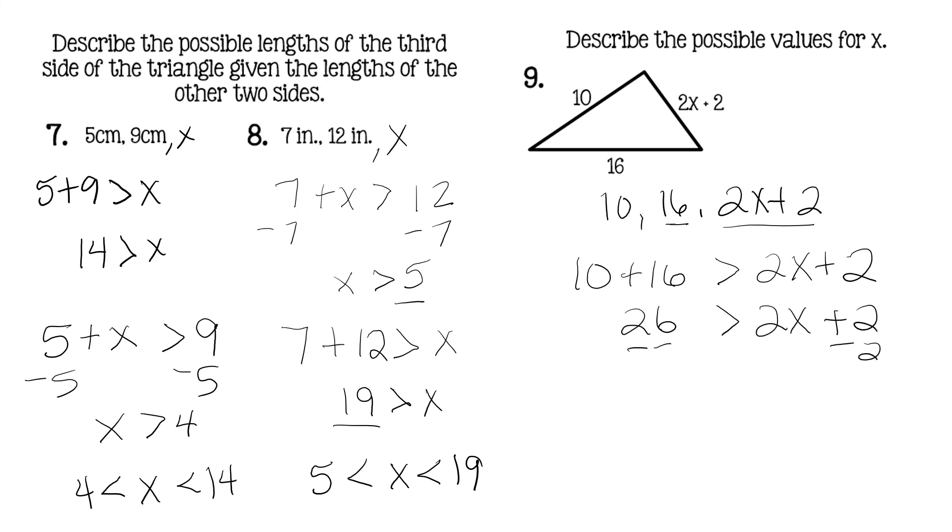Subtract 2 from both sides. So 24 greater than 2X. So dividing by 2, 12 is greater than X. So 12 is the largest.